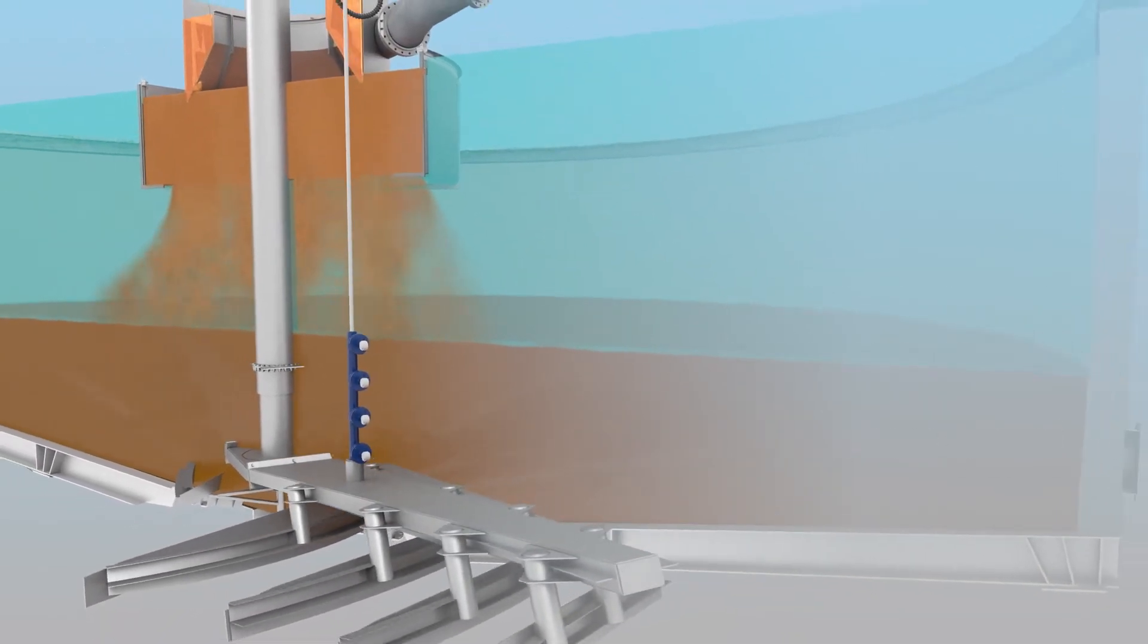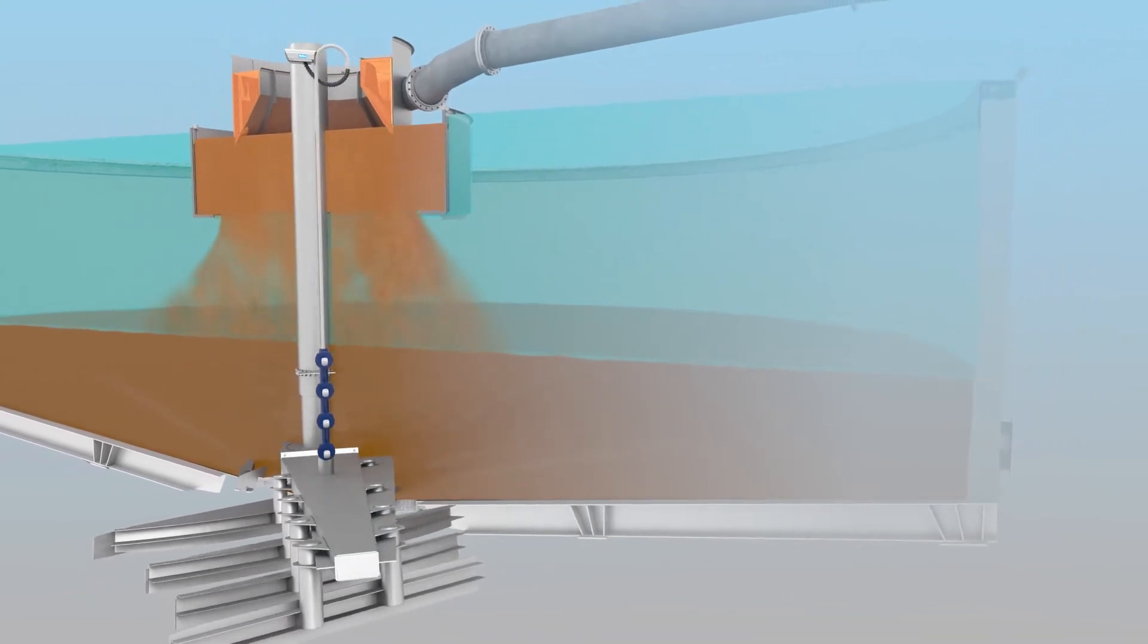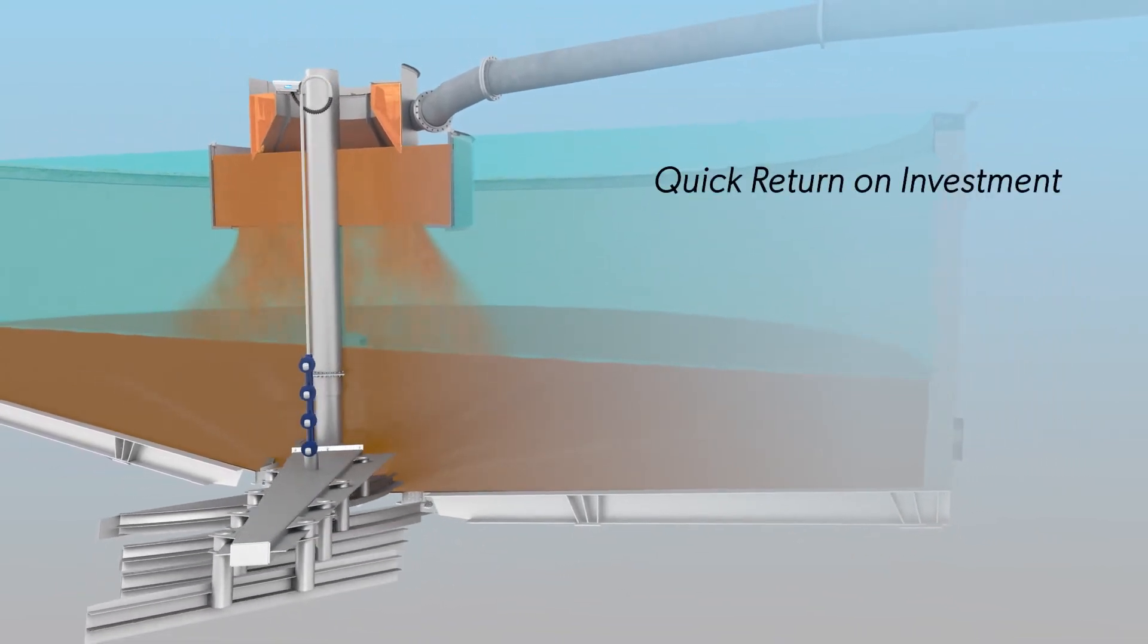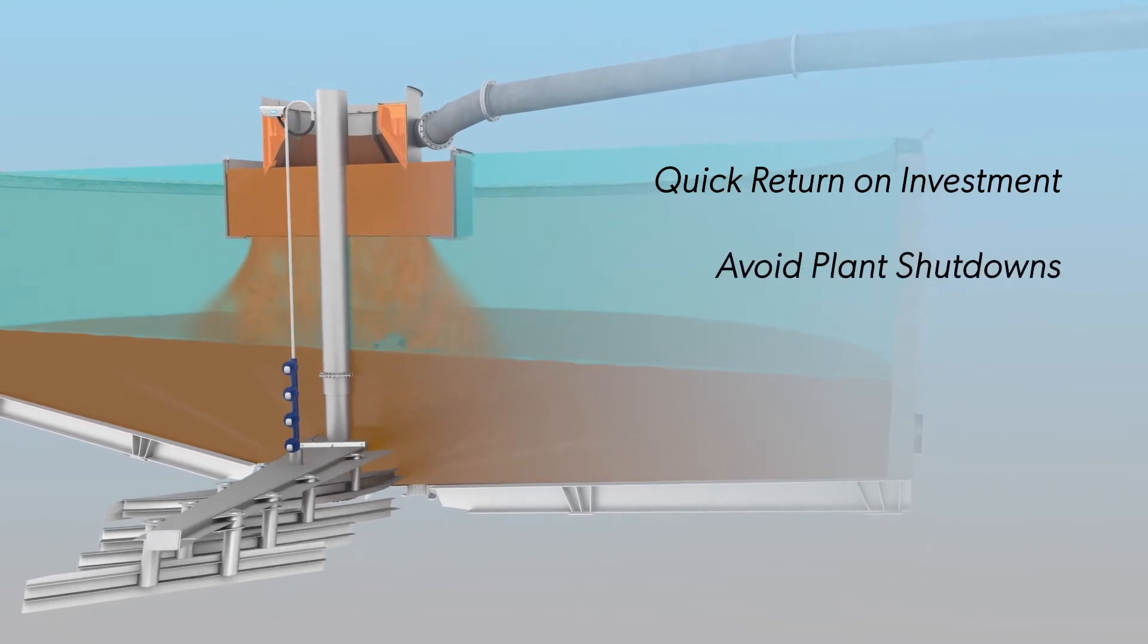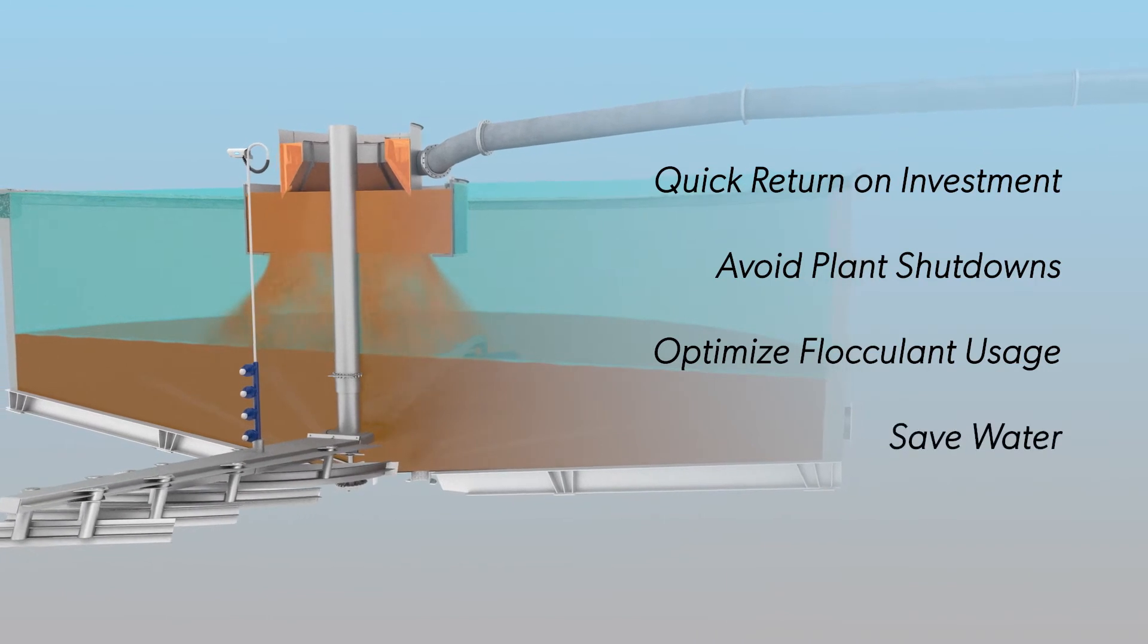The Mud Max can be customized to work in all new or retrofit thickeners and clarifiers, providing a quick return on investment by avoiding plant shutdown due to thickener upsets, optimizing flocculent usage, and saving water.